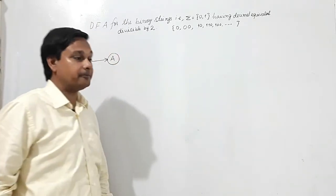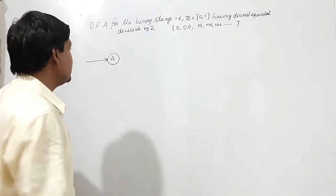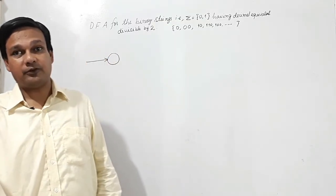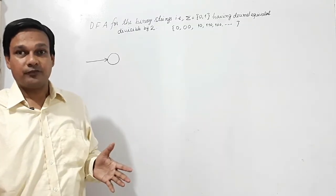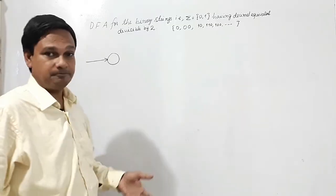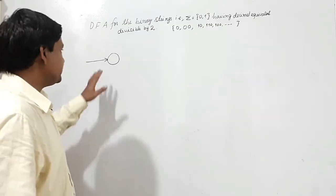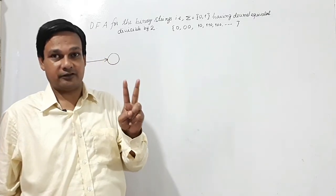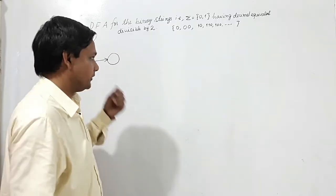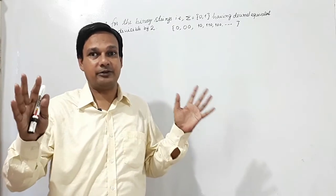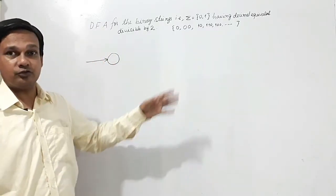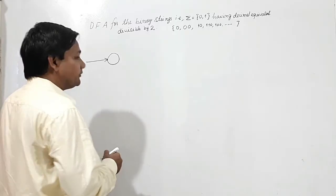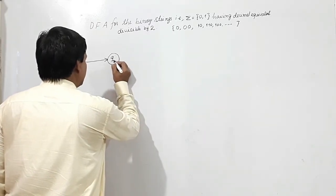If 0 comes it should be accepted, and 00 should also be accepted. Now, how many remainders will there be if I divide any number by 2? There will be two remainders: either 0 or 1. In this type of question, we can easily determine the number of states — whatever the number of possible remainders, that many states will be used. So here, the number of states will be 2.